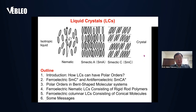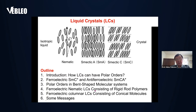This is the outline of my talk. First, I want to explain how liquid crystals can have polar orders in such a fluidic system. Then I will explain several polar liquid crystal phases which we discovered: namely, antiferroelectric smectic C_A*, polar orders in bent-shaped molecular systems, ferroelectric nematic liquid crystals consisting of rigid rod polymers, and ferroelectric columnar liquid crystals consisting of conical molecules. Finally, I will give you some message.